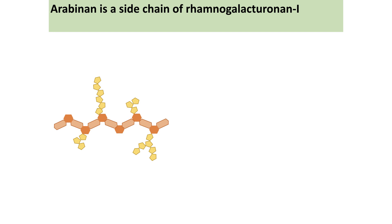Focusing specifically on RG1, it has a backbone structure with side chains called arabinan. Arabinan can come in multiple different forms: short chains, long chains, and these chains can be either branched or linear.